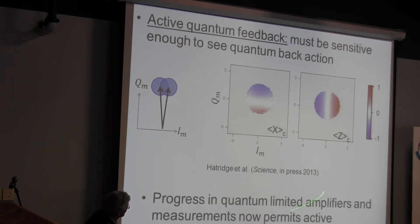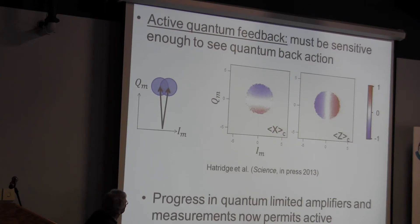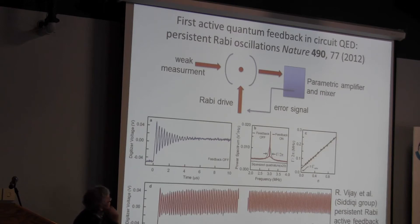Progress in quantum-limited amplifiers permits us to see the back action from a weak measurement by making a subsequent strong measurement. Because we can see that weak back action with good enough amplifiers, it's possible to do quantum feedback. The first quantum feedback measurement was done by the Berkeley group—RBJ and Irfan Siddiqi. They had a transmon qubit in a 3D cavity and Rabi-flopped it, putting a tone on the qubit at the transition frequency causing it to coherently rotate from ground to excited to ground to excited, over and over again.